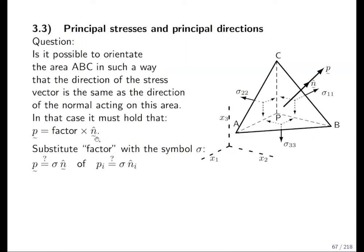N has no units. It's non-dimensional. P is Newton per meter square, force divided by area. So factor must have units of stress. So we use a sigma without any index to have a shorter version of the equation here. We substitute factor with a symbol sigma. Sigma without any index, what is it? Is it a tensor? No. Is it a vector? No. It's a scalar. So what we have here is one possibility, one number.